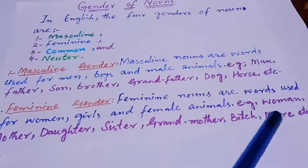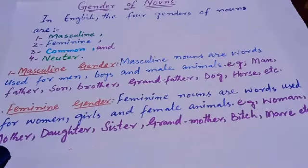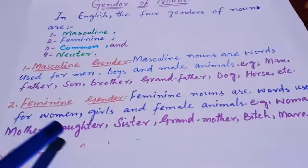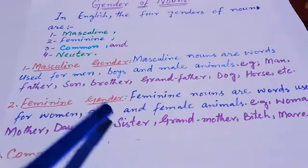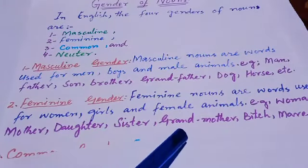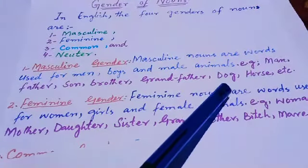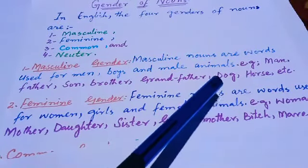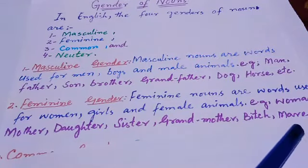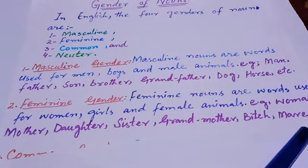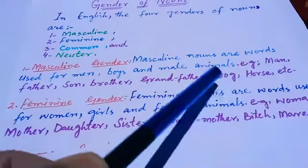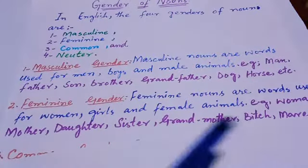Shabash! We have written father — so what is its feminine gender? Mother. We have written son, so feminine gender is daughter. Brother — sister. Grandfather — grandmother. We have written dog, so what is the feminine word? Dog is masculine gender, so its feminine is bitch. These are examples of feminine gender.